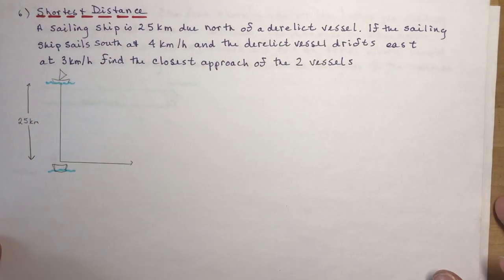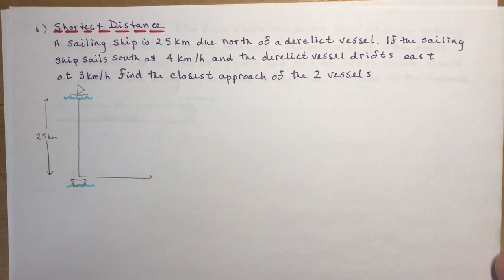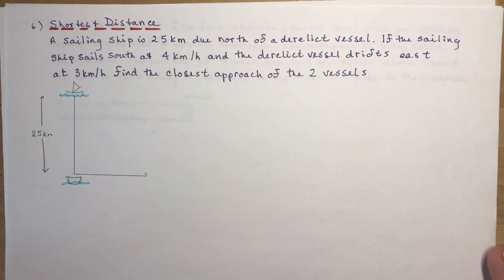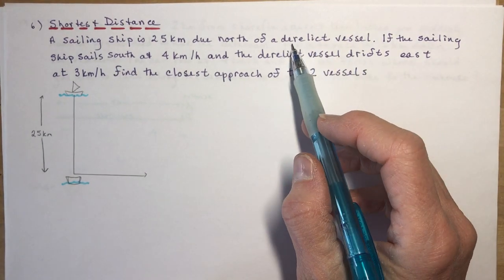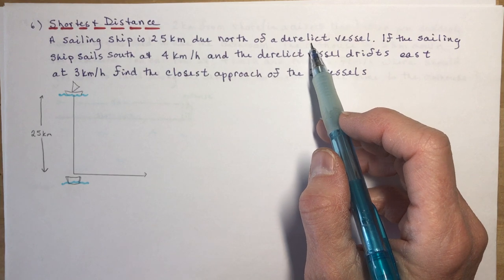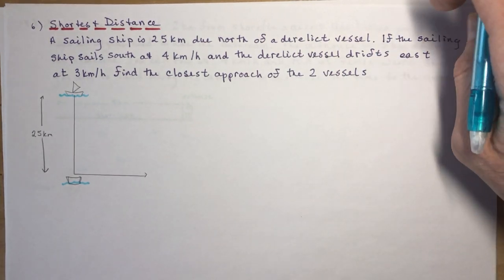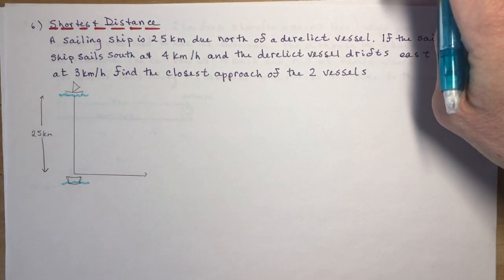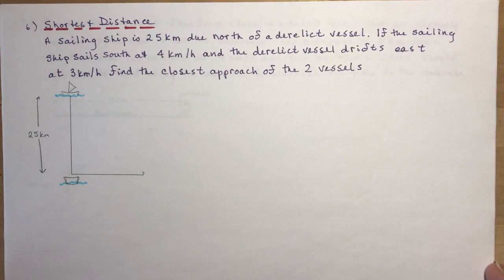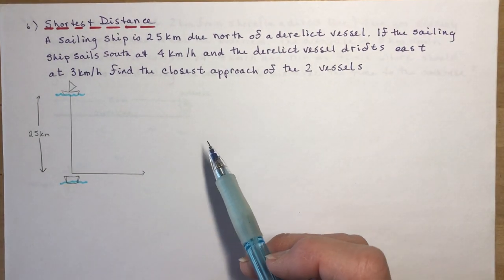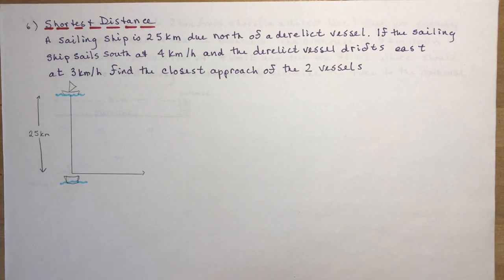Let's start with the sailing ship problem. A sailing ship is 25 kilometers due north of a derelict vessel — a derelict vessel is just one that isn't operational anymore. The sailing ship sails south at four kilometers per hour and the derelict vessel drifts east at three kilometers per hour. Find the closest approach of the two vessels.